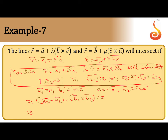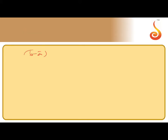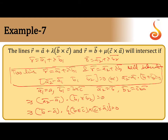So a2 - a1 = b - a. And b1 × b2 = (b × a) × (c × a). So we need: (b̄ - ā) · [(b × a) × (c × a)] = 0.